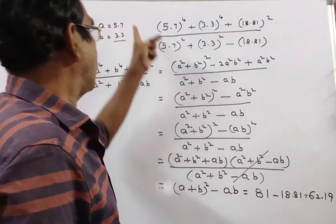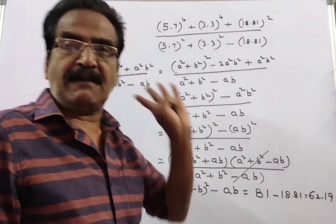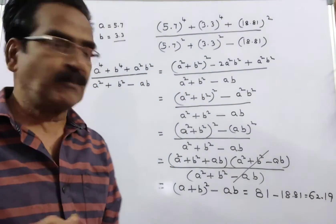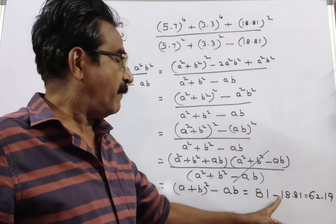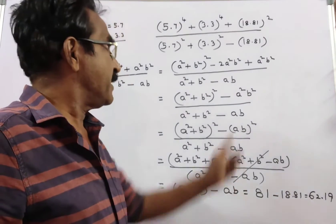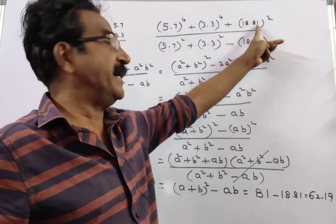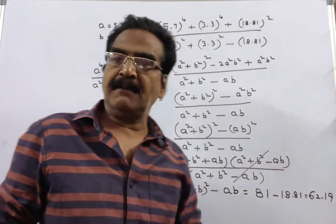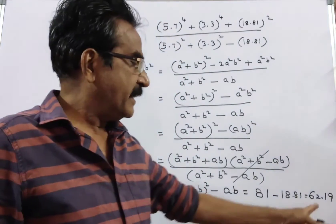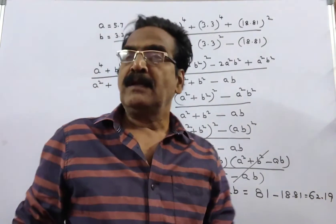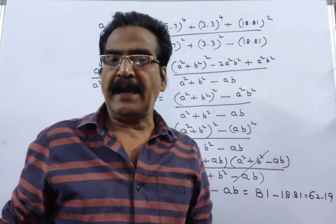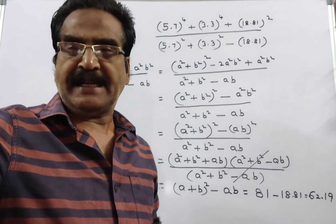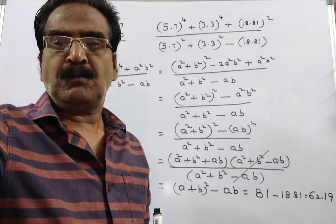A plus B whole square: 5.7 plus 3.3 means 9. 9 squared is 81, minus AB. AB means 18.81. 81 minus 18.81 equals 62.19. Friends, 62.19. Okay, friends. Thank you.